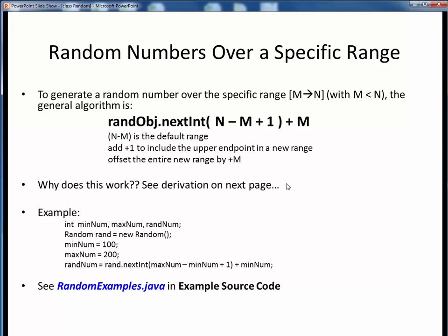We would first create a new random number generator object, which here is rand-obj, and then call its next int method with this indicated expression involving the desired endpoints, then offset that entire random number by M. Why does this work? Well, for the moment, we'll just need to take this on faith. But on the next slide, we'll take a look at the derivation of why this works.